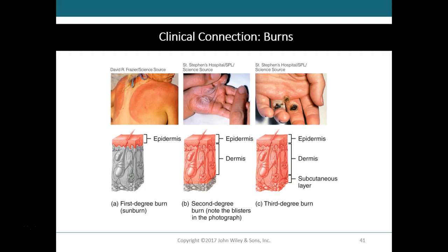In third degree burns, skin grafting may be required as part of the healing process. Injury to the skin tissues directly in contact with the damaging agent is called the local effect of a burn. However, there are systemic effects that can be an even greater threat to life. These can include dehydration, loss of blood, loss of plasma and proteins, bacterial infection because the barrier to the external environment has been lost, reduced blood circulation, decreased urine production as the body tries to retain fluids, and diminished immune response.